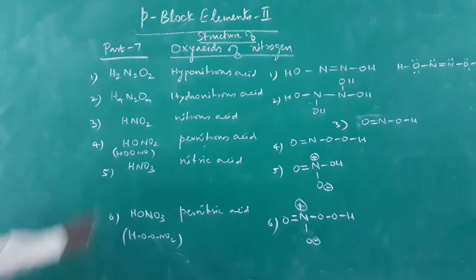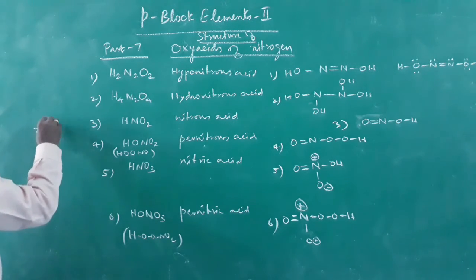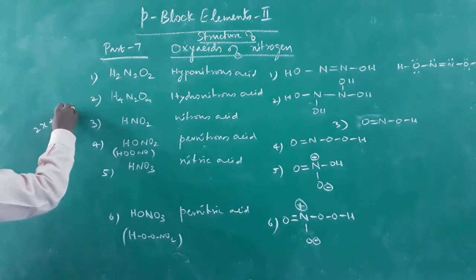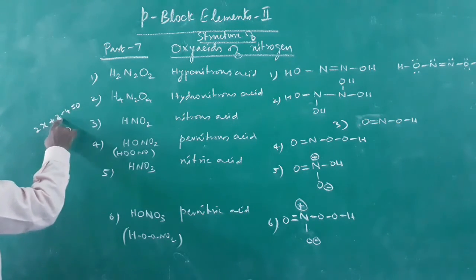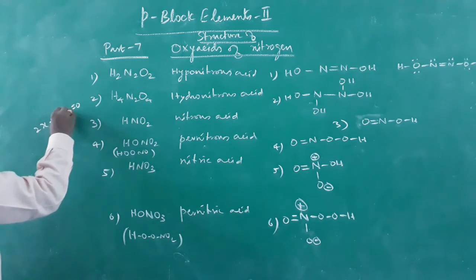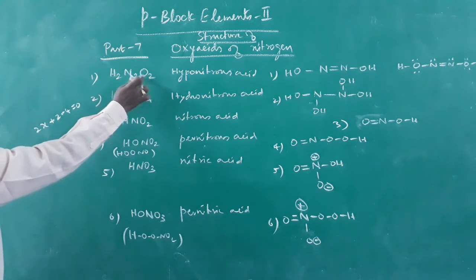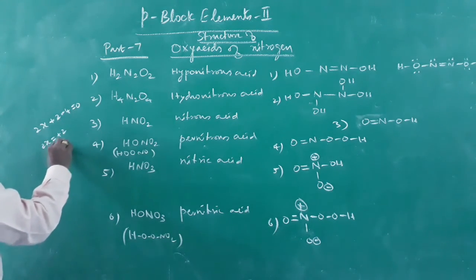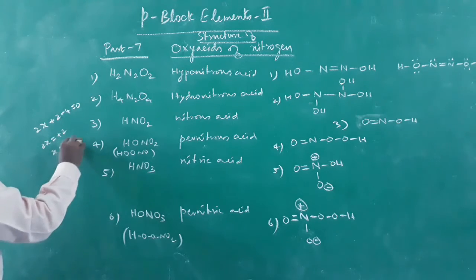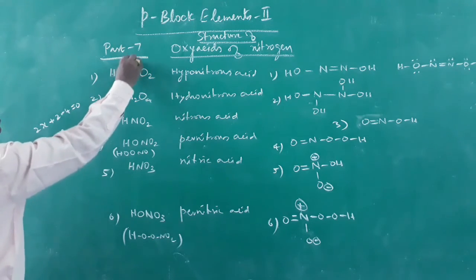For hyponitrous acid H2N2O2, the oxidation state calculation: 2(+1) + 2x + 2(−2) = 0, so 2x = +2, giving x = +1. The oxidation state of nitrogen in hyponitrous acid is +1.